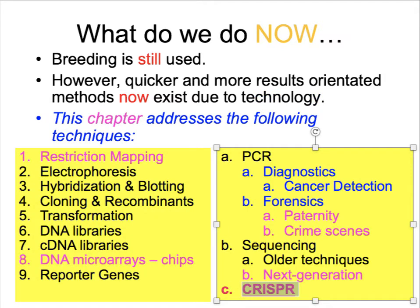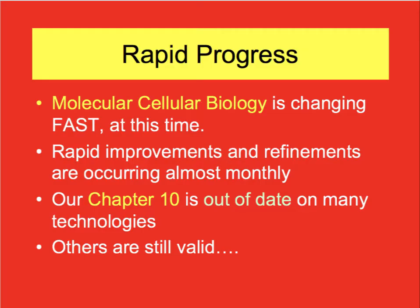The various sections of this chapter are arranged in a hierarchical order, reflecting the order in which these techniques will be applied to a project. The only exception is Part C, a new technology that has emerged since the textbook was written. This progresses us into a warning: molecular cell biology is a rapidly changing field, and improvements and refinements are occurring almost constantly. Unfortunately, chapter 10 is about four years out of date with some of the newer techniques, but the core technologies are still valid and used in many research labs.